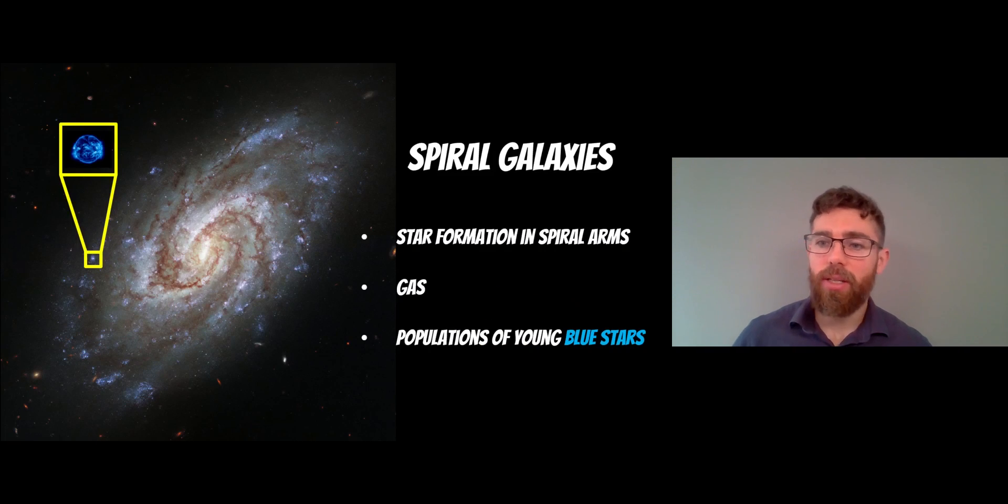Spiral galaxies have obviously got spiral arms, they're fairly obvious to see. They've got plenty of gas in them, they undergo star formation because they've got gas. So that gas collapses and it feeds recent star formation. That then results in having populations of young blue stars because they have the gas to do so. And as they age, obviously the gas gets depleted, the stars will age and become redder and the spiral arms will get tighter.